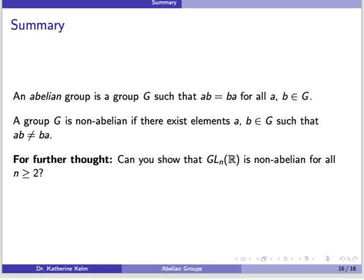To summarize: an abelian group is a group G such that a·b = b·a for all a and b in G. A group G is non-abelian if there exist elements a and b that do not commute with one another. As a question for further thought, can you show that GL_n(R) is non-abelian for all n greater than or equal to 2?